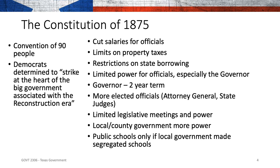To limit big government, they cut salaries for officials serving in government. They put limits on property taxes so the government could not just decide what property taxes were without consulting the people. They restricted state borrowing so that public officials could not borrow on behalf of the state without approval. They limited the power of officials, especially the governor. The previous constitution had a very strong governor, but now we have a very weak governor.